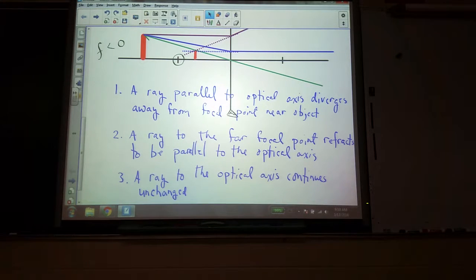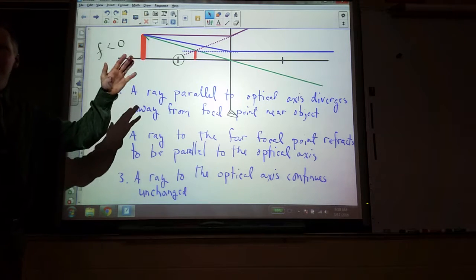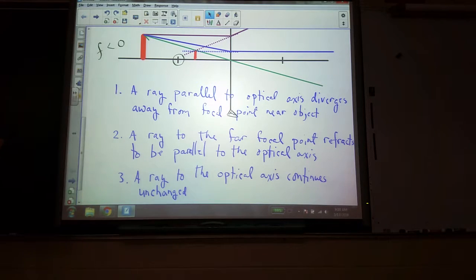So it's virtual. What else? Upright. Demagnified. And demagnified, always smaller. And you'll get a similar result for this one, no matter where it is. It's always going to be like that. Just like a convex mirror, it's always upright and demagnified and virtual. Same sort of thing.